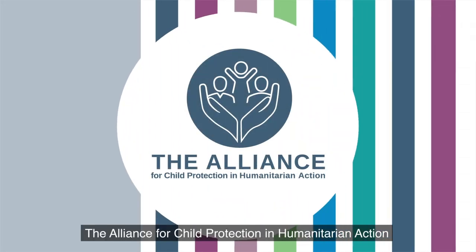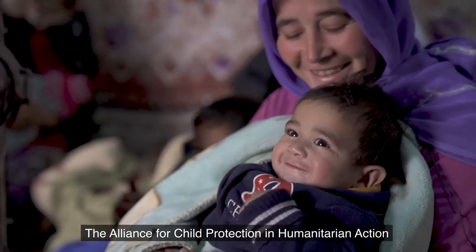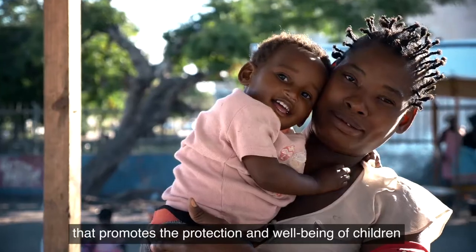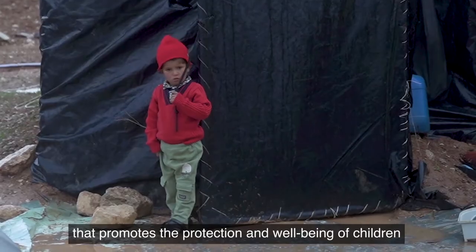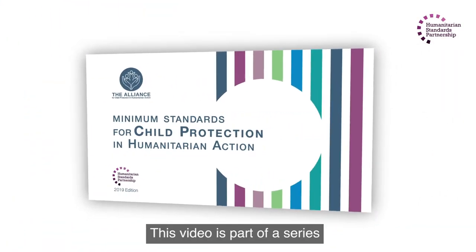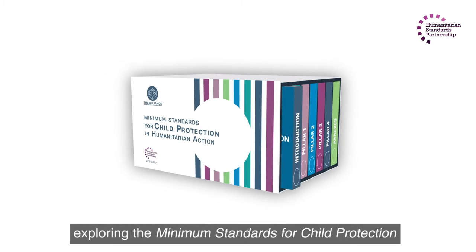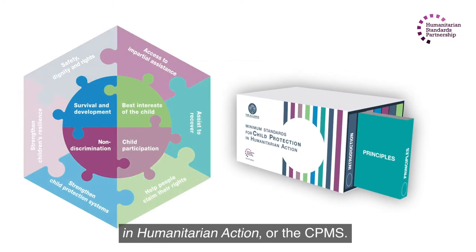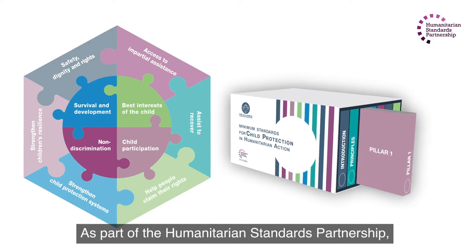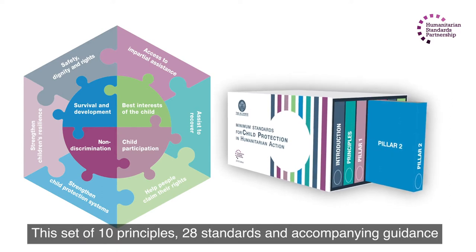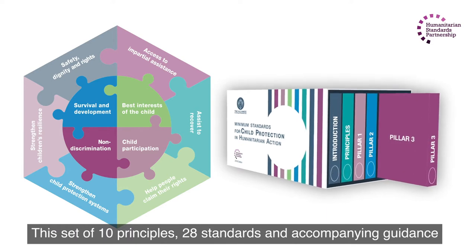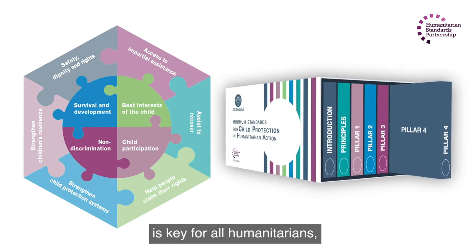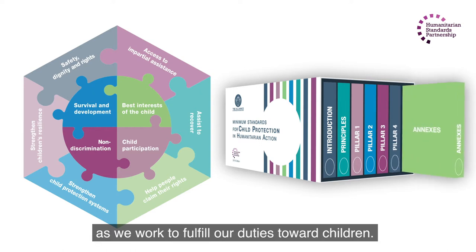The Alliance for Child Protection in Humanitarian Action is the global interagency network that promotes the protection and well-being of children in humanitarian settings. This video is part of a series exploring the minimum standards for child protection in humanitarian action, or the CPMS. As part of the Humanitarian Standards Partnership, this set of 10 principles, 28 standards and accompanying guidance is key for all humanitarians as we work to fulfill our duties toward children.